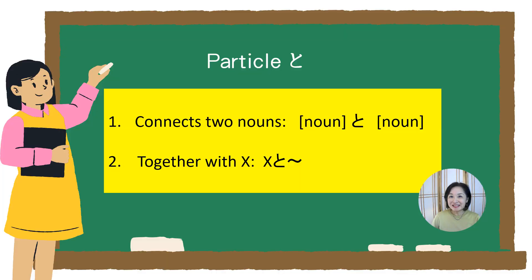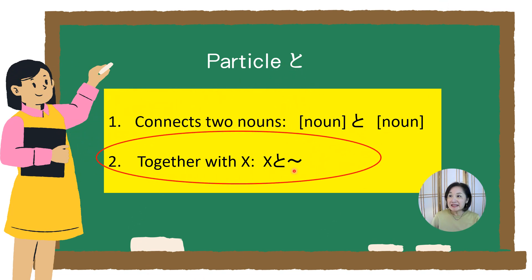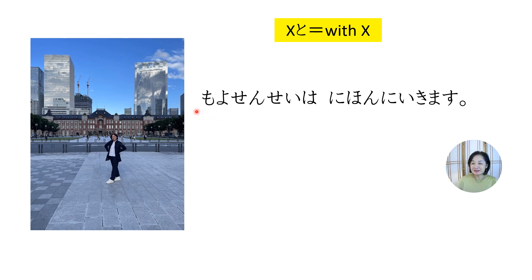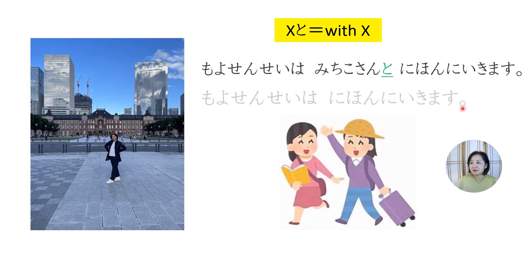Let's look at another use of particle TO. It means 'together' or 'with' and shows that an action is done with someone. The sentence structure is X と, where X is the person or animate object. For example: もよ先生は日本に行きます, Moyo-sensei will go to Japan. But if Moyo-sensei goes to Japan with her friend Michiko, you say: もよ先生はみちこさんと日本に行きます.